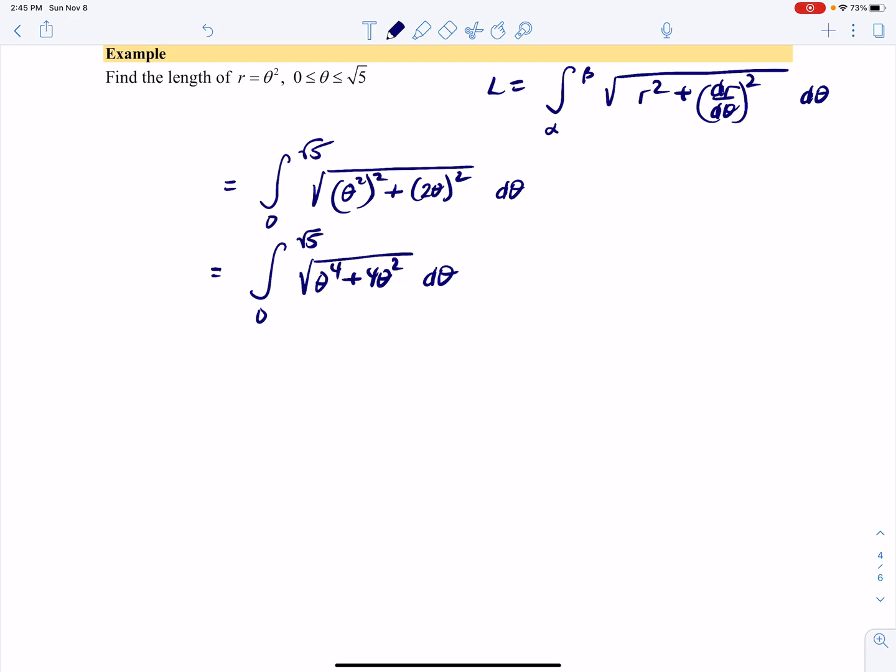We have to massage this a little bit to get it to work out. Notice we have a common factor of θ² under the radical, so we have θ²(θ² + 4).